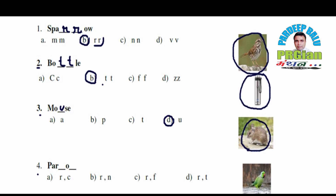Fourth word is P A R _ O _. What will it form? Parrot! P A R R O T — Parrot. So what is the right answer? D. Okay? So in this way our exercise is complete. Let's see the next one.